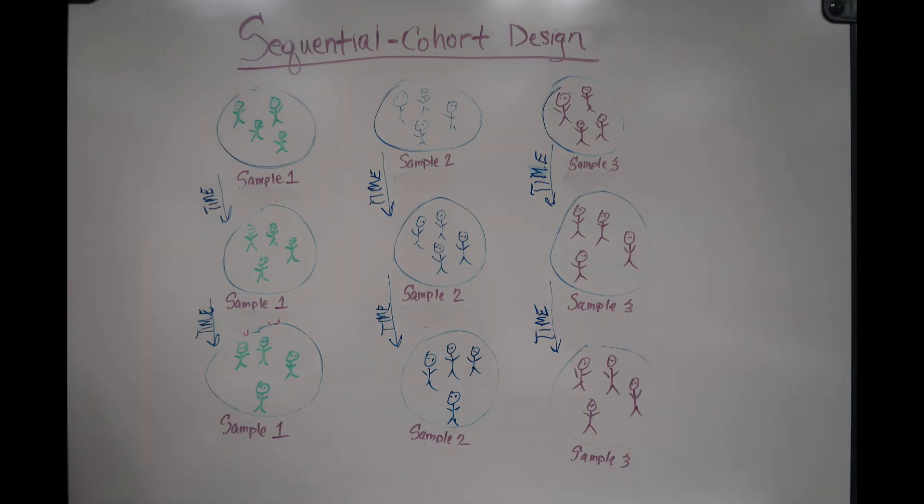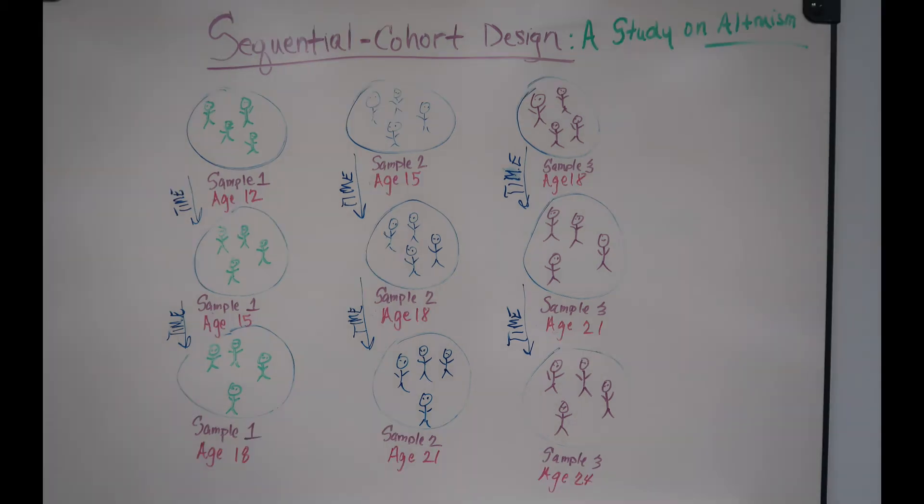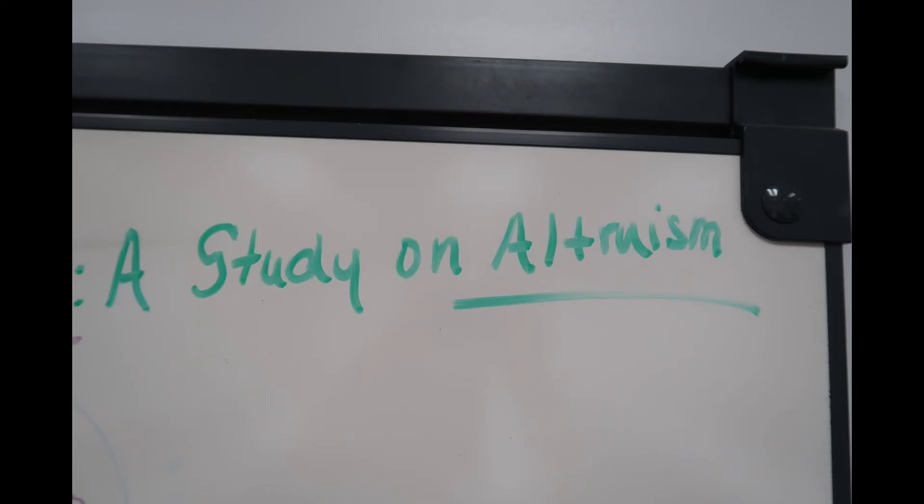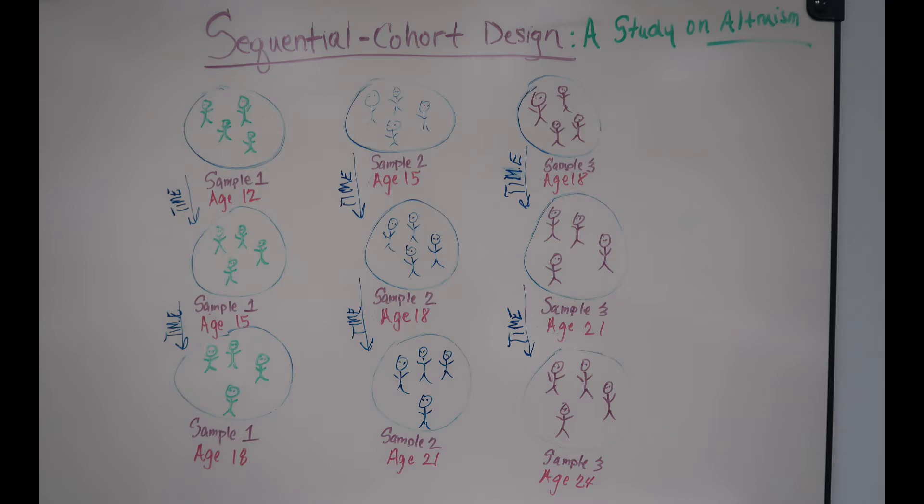Our study, which is based on the sequential cohort design, is a study of altruism in adolescents through young adulthood, ages 12 to 24 years.